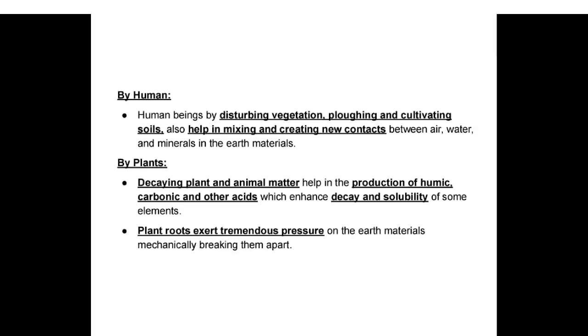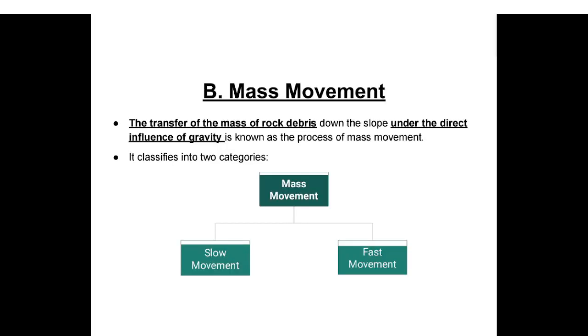Biological weathering is a contribution to or removal of minerals and ions from the weathering environment, and physical changes due to growth or movement of organisms — animals, humans, and plants. Burrowing and wedging by organisms like earthworms, termites, and rodents help in exposing new surfaces to chemical attack and aid penetration of moisture and air. Humans disturb vegetation and cultivate soils, creating new contacts between air, water, and minerals. Decaying plant and animal matter help in production of humic and carbonic acids which enhance decay and solubility of some elements; plant roots exert tremendous pressure, mechanically breaking earth materials apart.